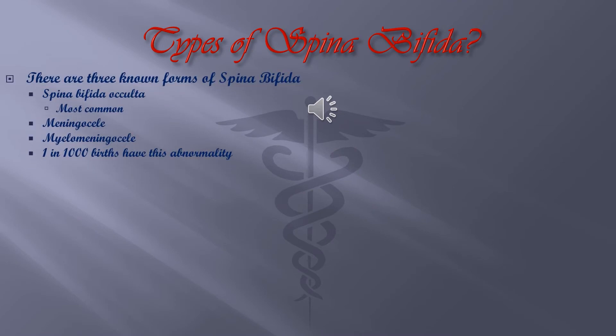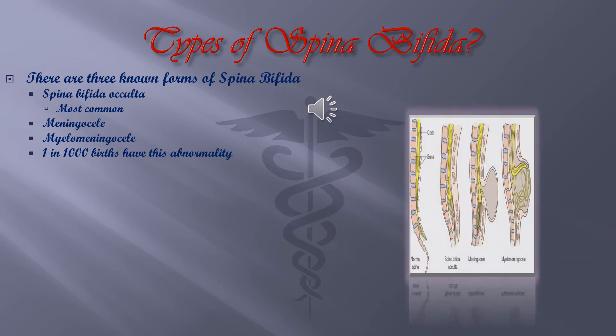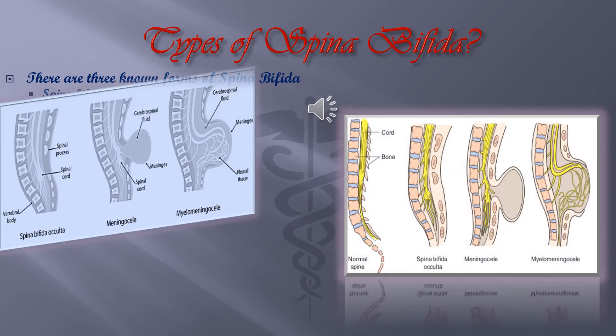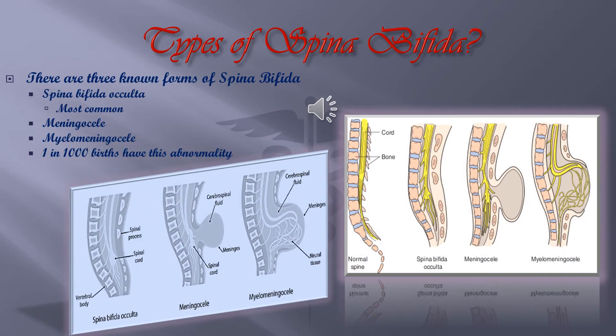Types of Spina Bifida: there are three known forms — Spina Bifida Occulta, Meningocele, and Myelomeningocele. Spina Bifida Occulta is the most common, and out of a thousand births, one of them will have Spina Bifida.